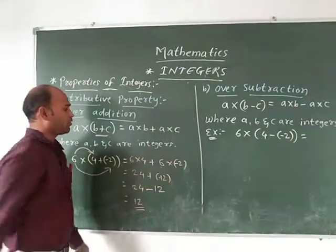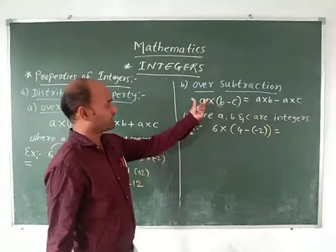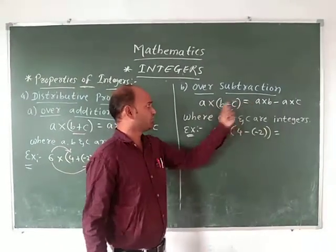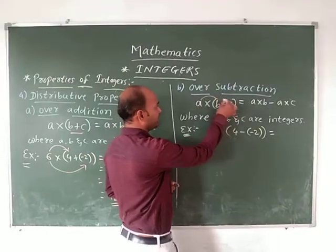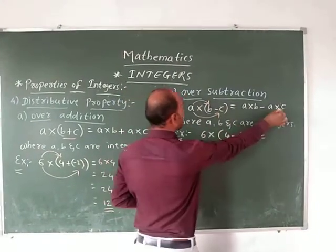That is distributive property over the subtraction. So what we can see here, with this general equation, we can see A into B minus C which equals to A into B minus A into C.